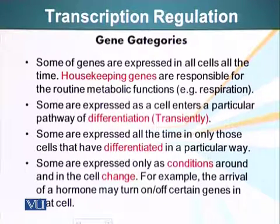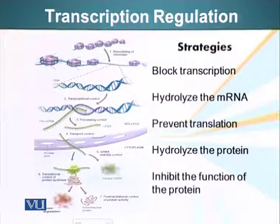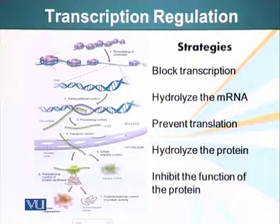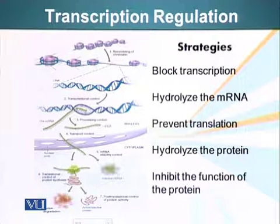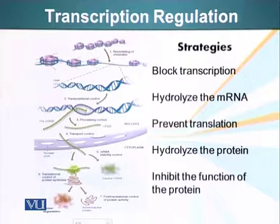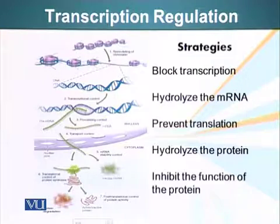There are mechanisms which allow organisms to regulate what types of proteins are present in a cell. Some strategies, other than blocking transcription or making RNA from DNA, include hydrolyzing the messenger RNA after it has been made, preventing it from being translated into a protein, or if the protein has already been formed, the protein itself can be hydrolyzed or made inactive or degraded.